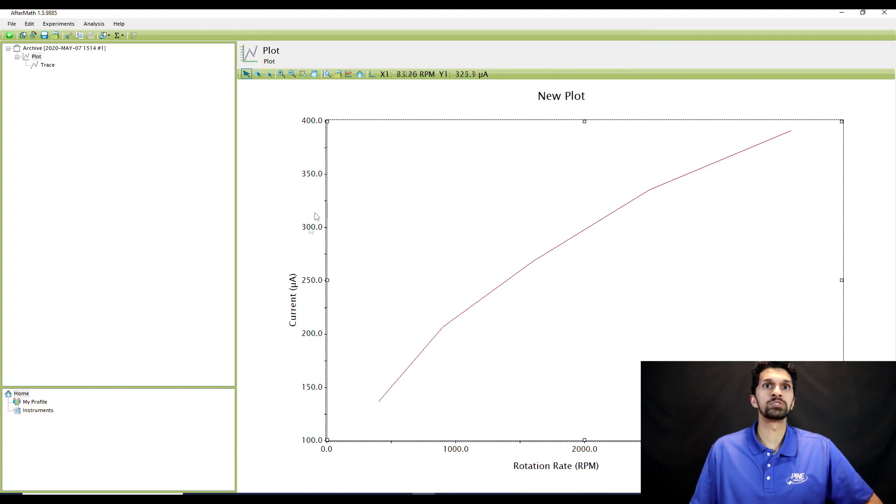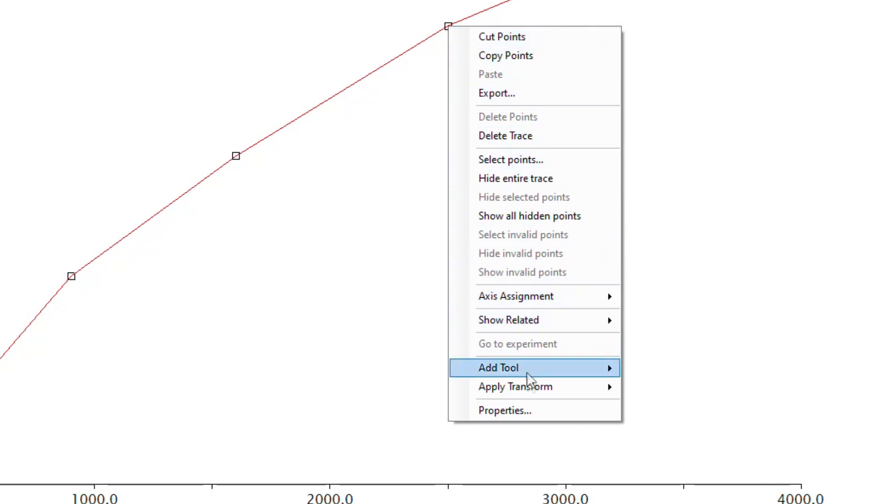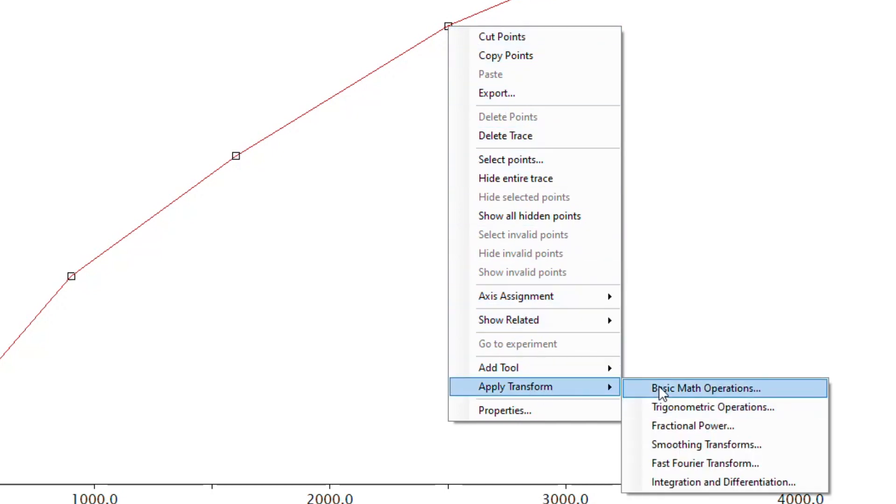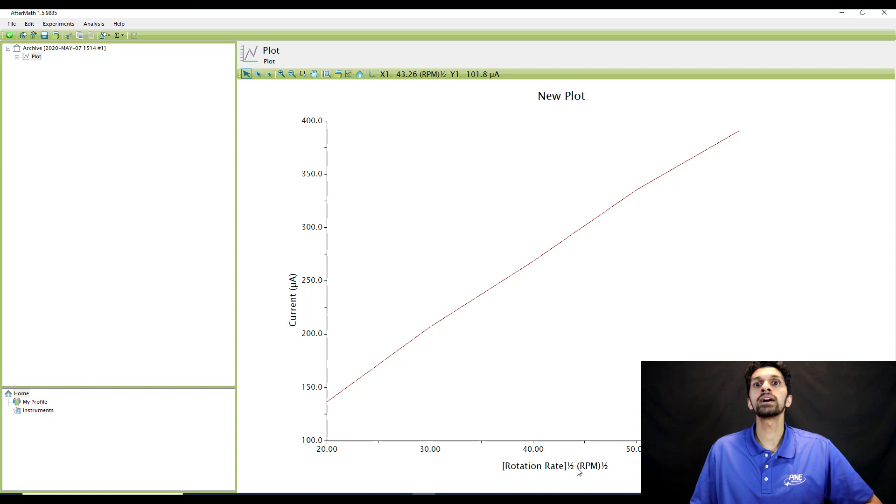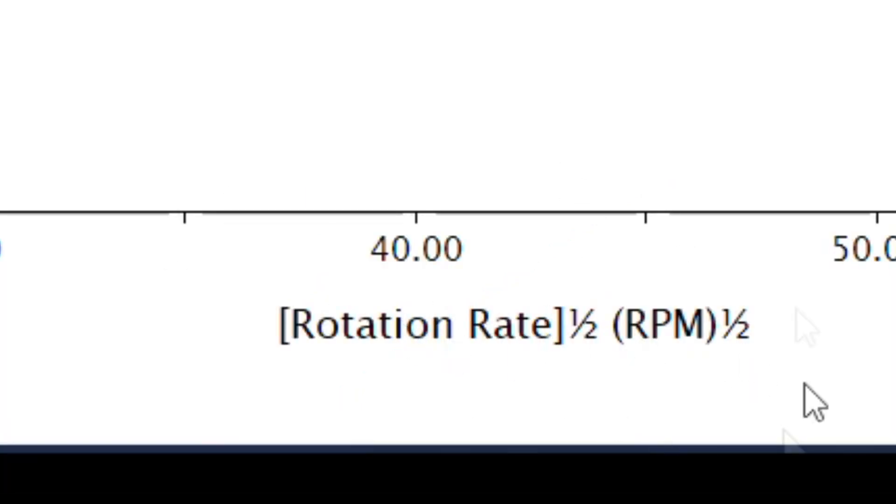All right, and I'm going to hit the x-axis data, because I want to be able to make this plot using the square root of the rotation rate. So I want to raise the x-axis data to the one-half power. So to do that, I can perform a basic math operation. I'm going to left click on the data points, right click, go to apply transform, and go to basic math operation. Then I'm going to perform this on the x-axis data only, and I'm going to hit square root, and then go to OK. And now you can see here in the bottom, I have the rotation rate data raised to the one-half power.